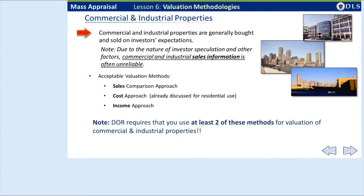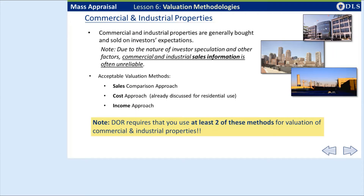For many reasons, commercial and industrial sales information is often unreliable, as these properties are often bought and sold on investor expectations. The three acceptable valuation methods are the sales comparison approach, the cost approach, and the income approach. DOR guidelines require that at least two of these approaches to value be supported and submitted for commercial and industrial properties at the time of certification.